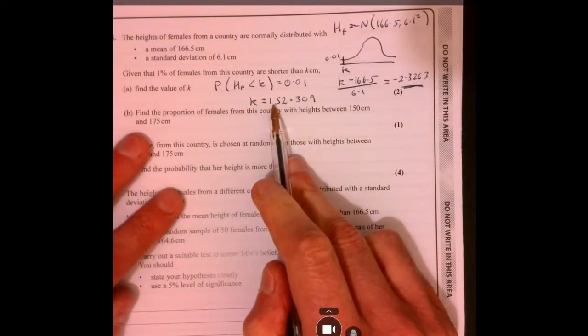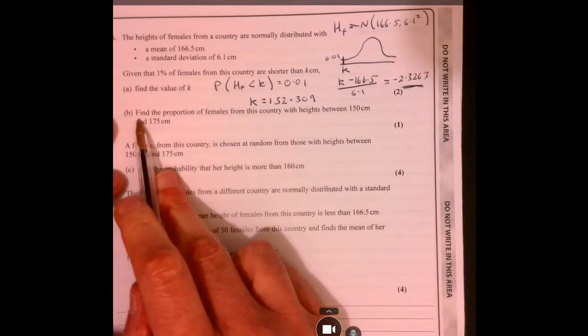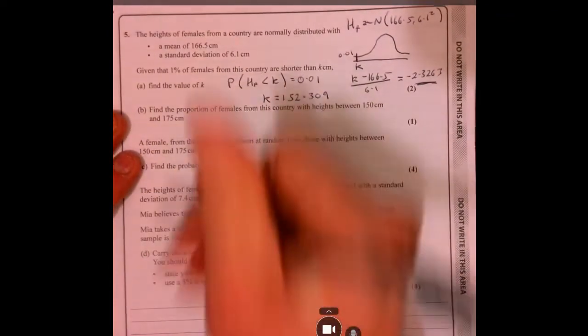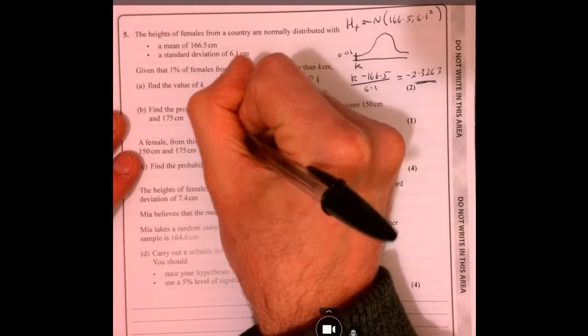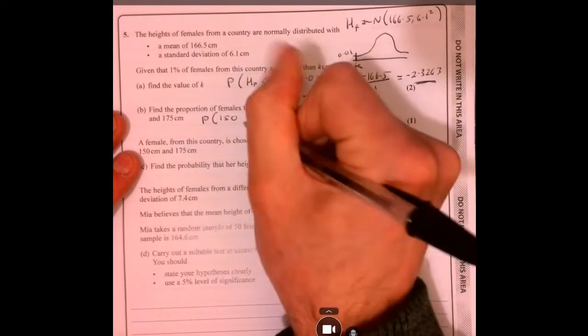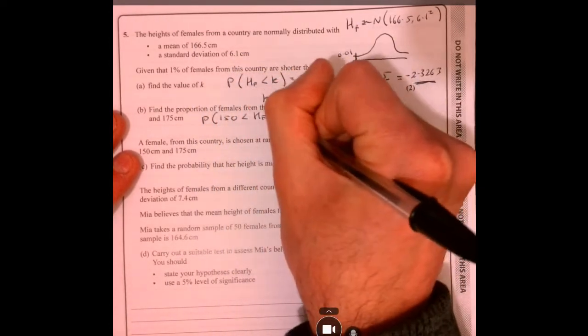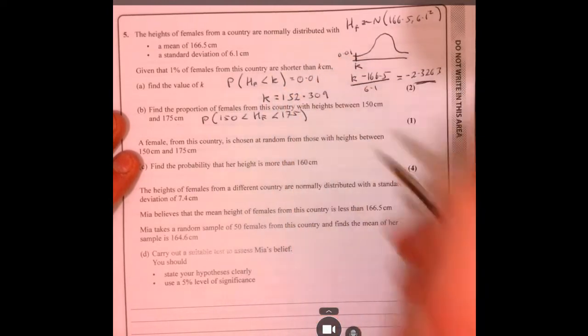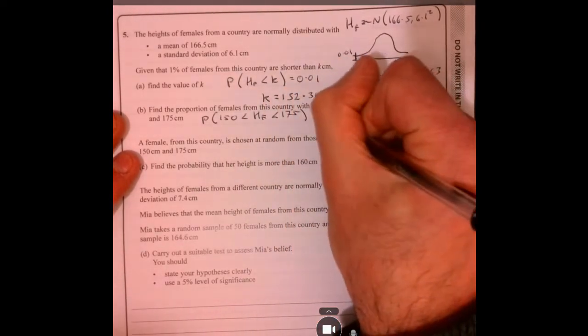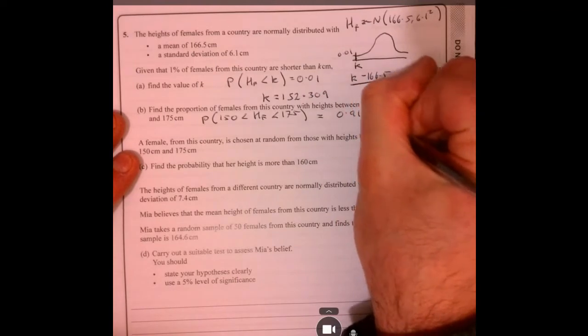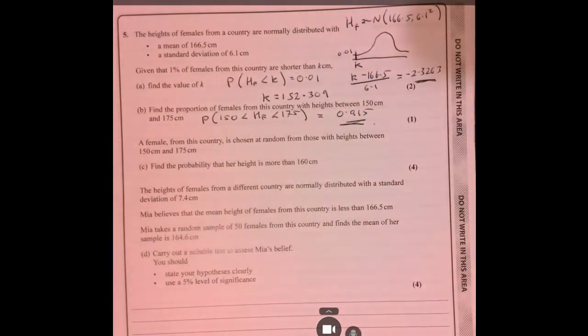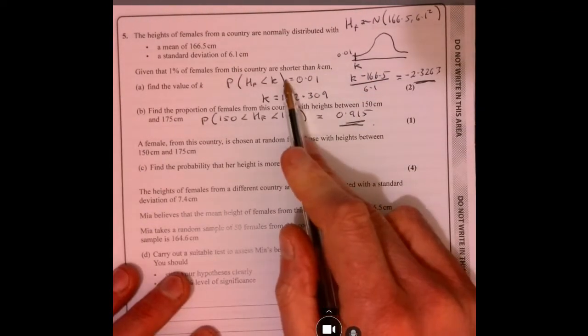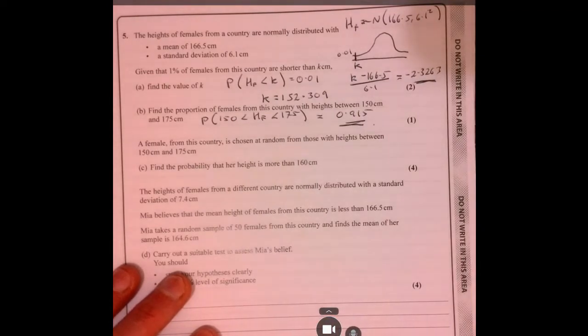Working from here, part B, again just using your calculator. We've got 150 between 175. It's just one mark, just going to pop it in your calculator. Make sure you can use your calculator properly, and again that's the case A and B, just using your calculator in the right way.